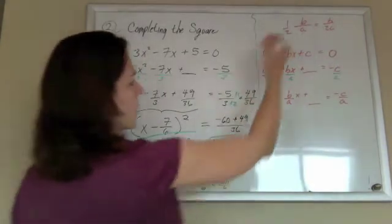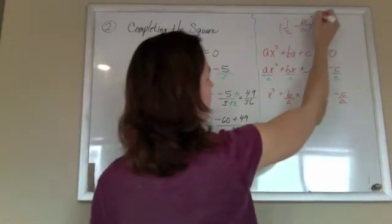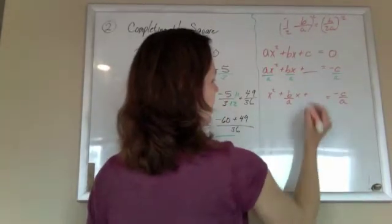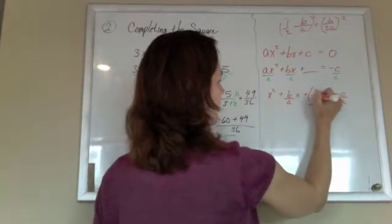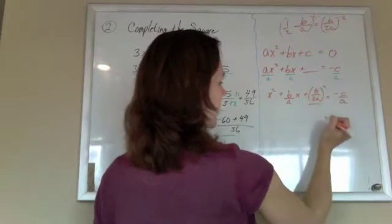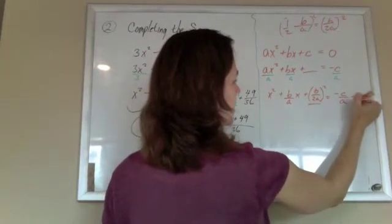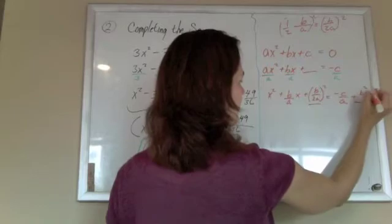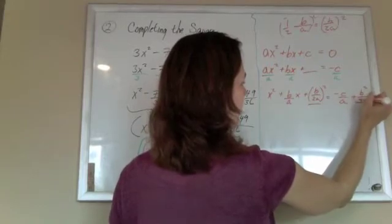And I want to square that, so that's b over 2a squared, right? And on this side, I'll multiply it out, that's b squared over 4a squared.